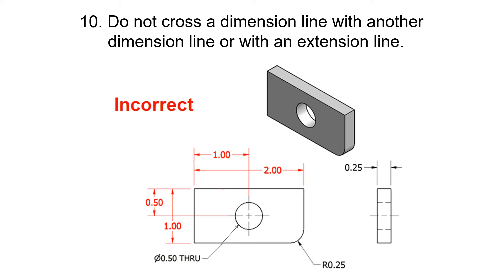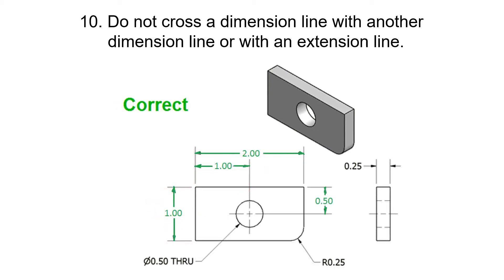Over here, this dimension line is being crossed by this extension line, so that's no good. Sometimes you will have to cross an extension line with another extension line. It's not really in this drawing, but let's see if I could point it out later. Crossing extension lines is okay if necessary. They were saying don't make an extension line through a dimension line.